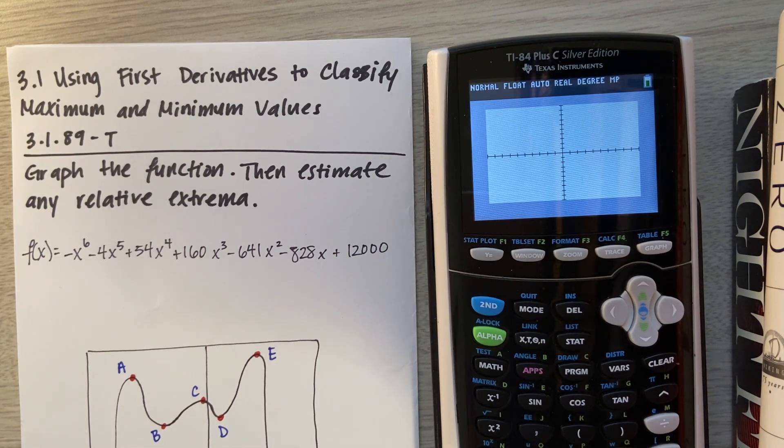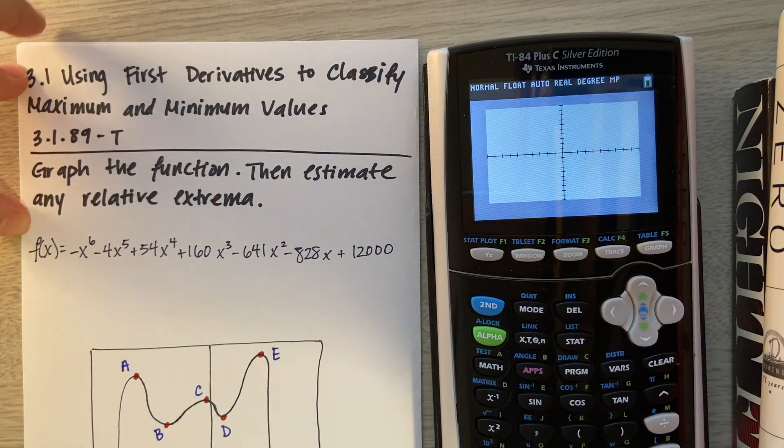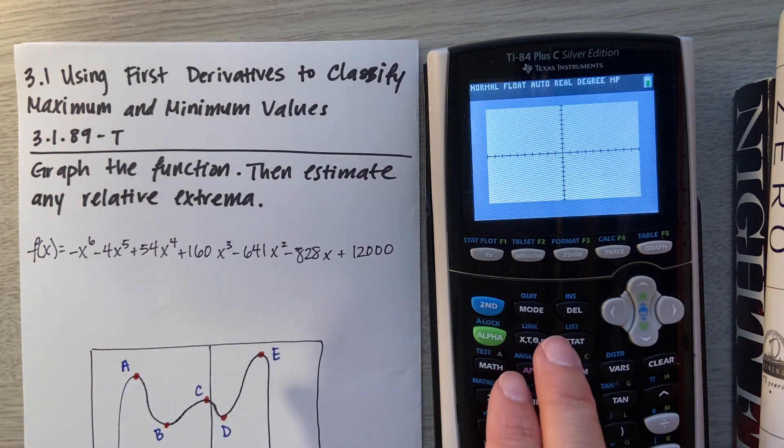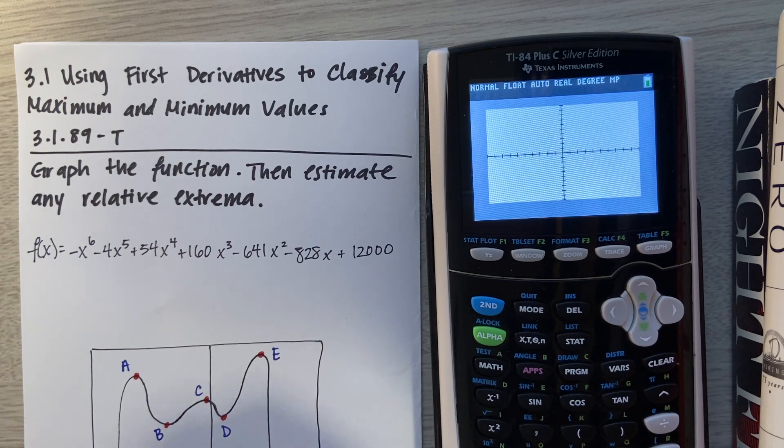Hi everyone! This video will go over how to find max and min using a graphing calculator. This is the question I'm referring to, and we shall get started. The calculator I'm using is a TI-84 Plus C Silver Edition. I believe any other Texas Instruments graphing calculator will also work using this method.